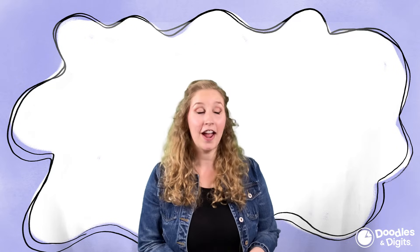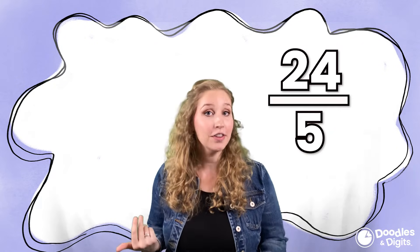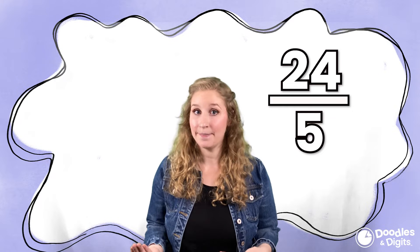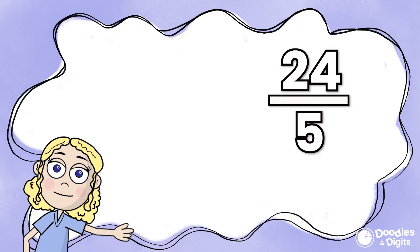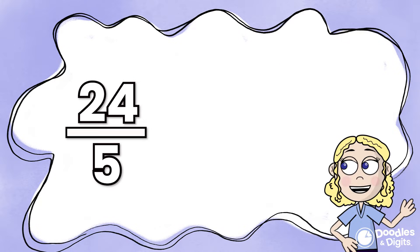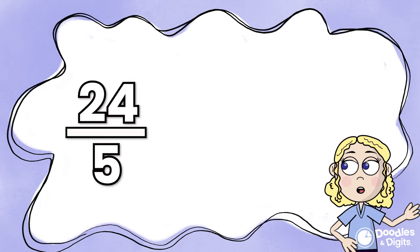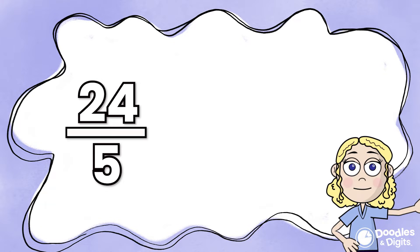How do we turn a fraction like this, an improper fraction, or a fraction greater than one into a mixed number? So what we're going to do is we're going to turn this improper fraction into a mixed number. We can convert an improper fraction into a mixed number by taking out wholes.